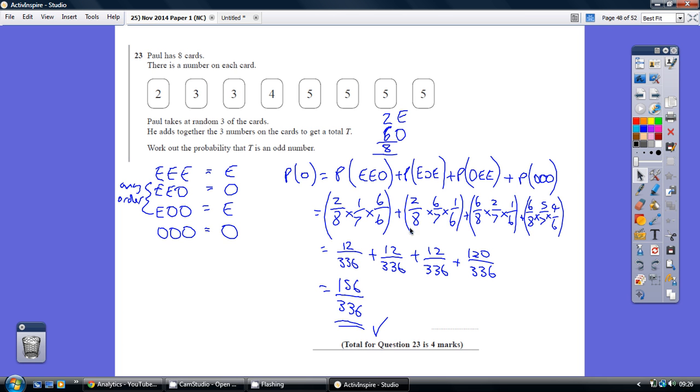So we just need to work these out. Eight times seven times six on each occasion is 336. Two times one times six is twelve. Two times six times one is twelve. Six times two times one is twelve. Six times five times four is 120. Don't try and simplify them. Just keep the same common denominator.